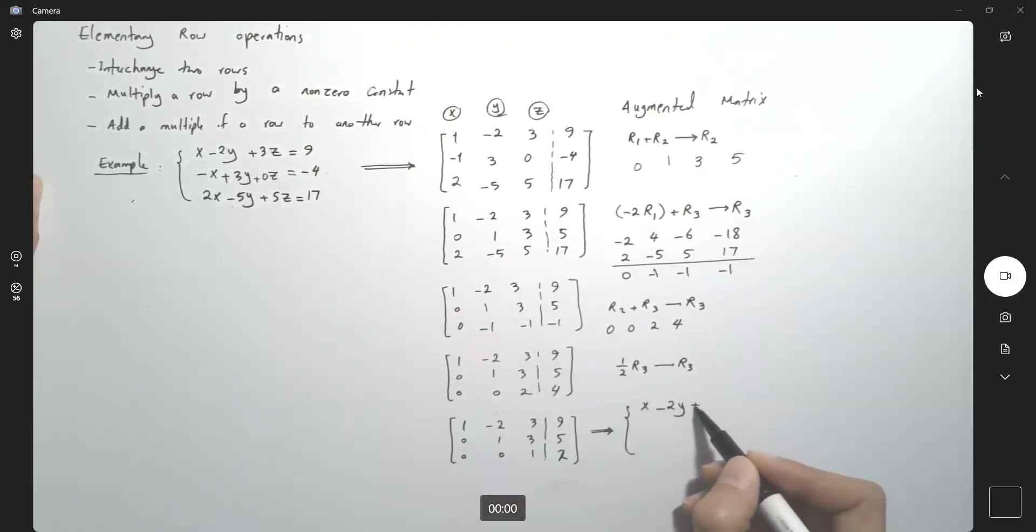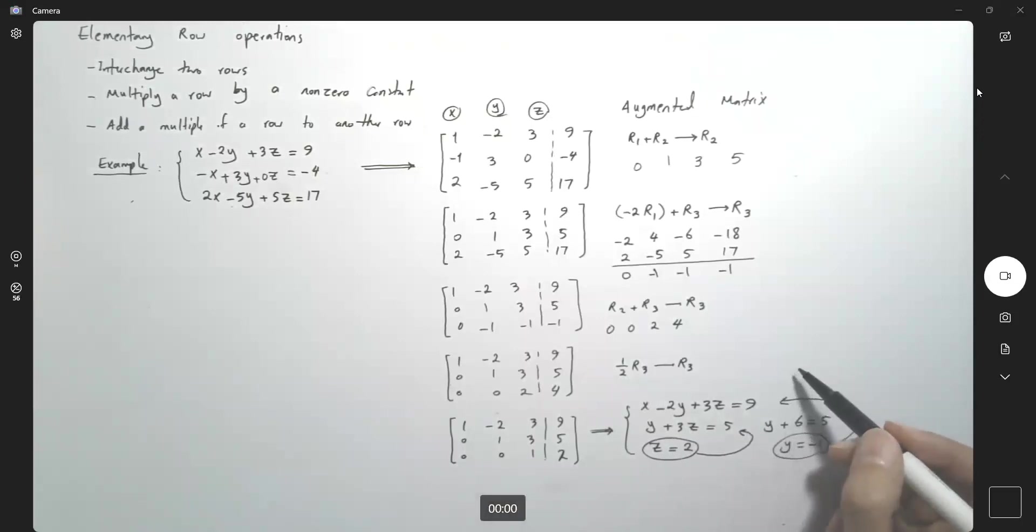I have x minus 2y plus 3z equals 9. Then I have 0x, 1y plus 3z equals 5. 0x plus 0y plus 1z equals 2. Hey, I solved it easily. My z is equal to 2. I substitute this here. y plus 6 is 5. So y is negative 1. I substitute both of them in the very first equation. I have 1 plus 2 plus 6 equals 9. This is 1x.